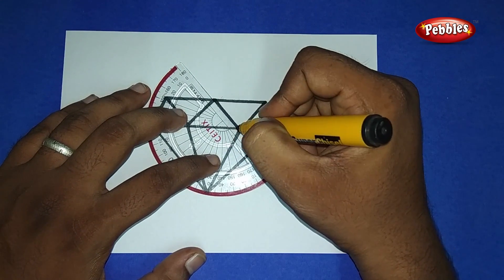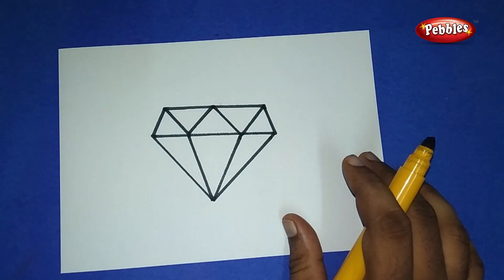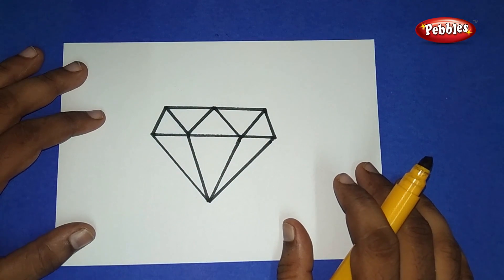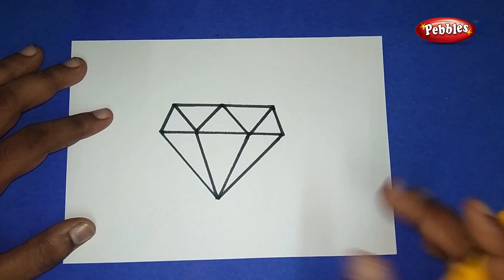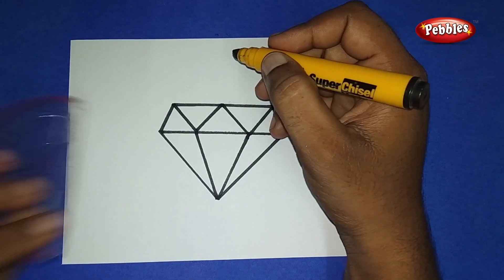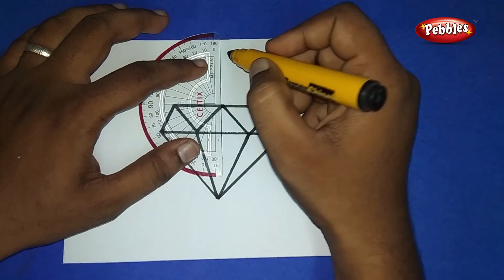Now we have two triangles at the top and three triangles at the bottom. At the center top, draw a small line.